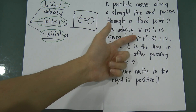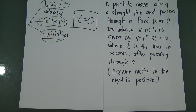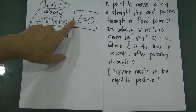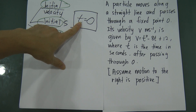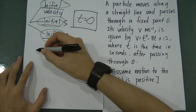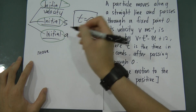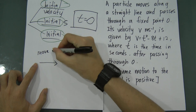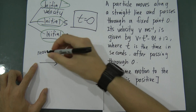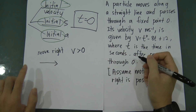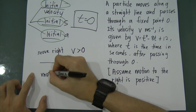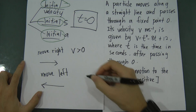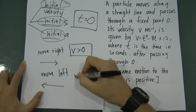For example, if the question asks you to find initial velocity, substitute t equals zero into the velocity equation. So if v equals t squared minus 8t plus 12, when t equals zero, v equals 12 ms⁻¹. This means before the time started calculating, the velocity already started at 12. Also, if the particle moves right, velocity is greater than zero; if it moves left, velocity is less than zero.